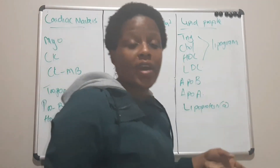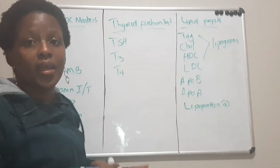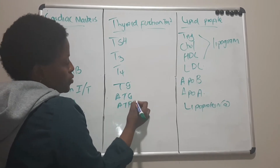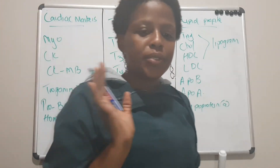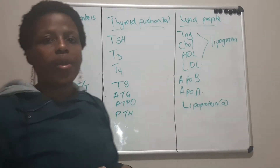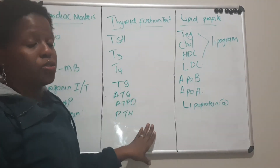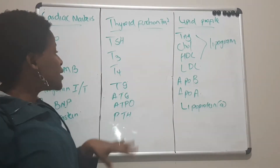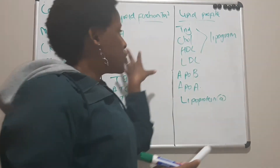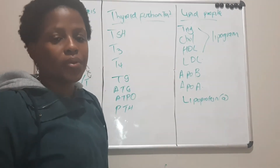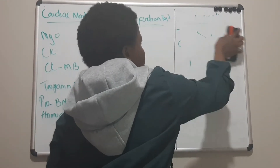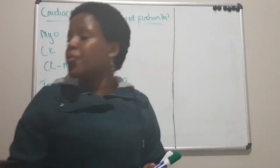The thyroid tests don't end there. There is also TG which is thyroglobulin, anti-TG, and TPO or thyroid peroxidase antibodies, which can also be done. I also want to add PTH, which is the parathyroid hormone. However, those are not requested routinely — the ones routinely requested are the first three: TSH, T3, and T4. We will see when and how when we deal with each test one by one.